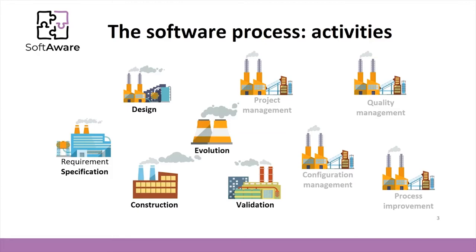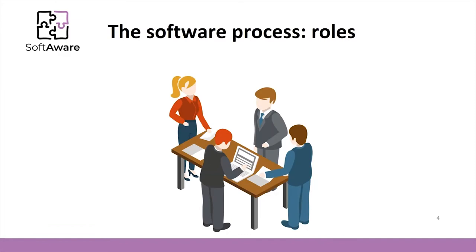All the software process activities are performed by persons who play a specific role in the software development process. Depending on a process, one person might play several roles. In this example, we pictured the roles of the Scrum process. Alice is the product owner — she wants her product to be the right one, therefore she will work a lot on the specification of the requirements.